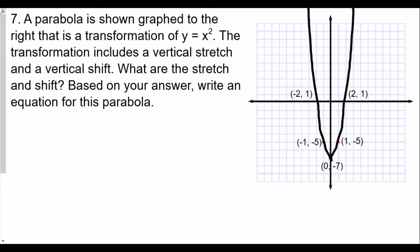We have question 7: a parabola is shown graphed to the right that's a transformation of y equals x squared. The transformation includes a vertical stretch and a vertical shift. Based on your answer, write an equation for this parabola. Well it's a vertical stretch and vertical shift, so we know that there hasn't been any horizontal movement.